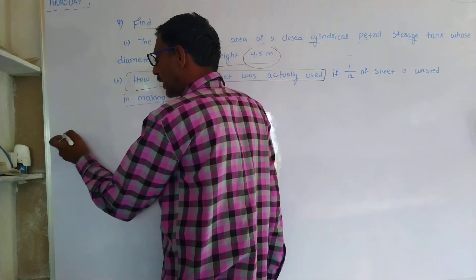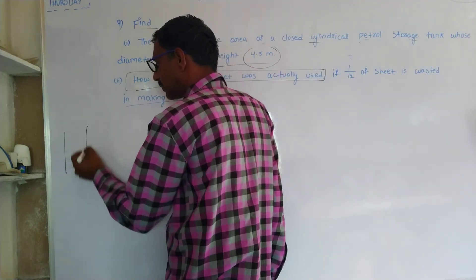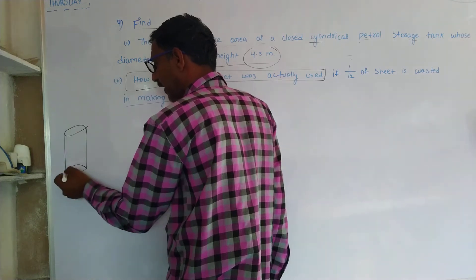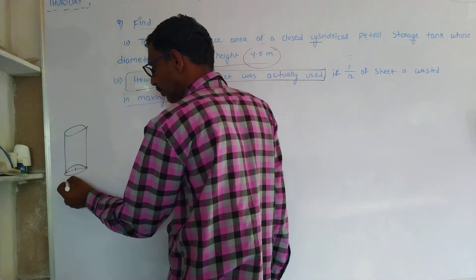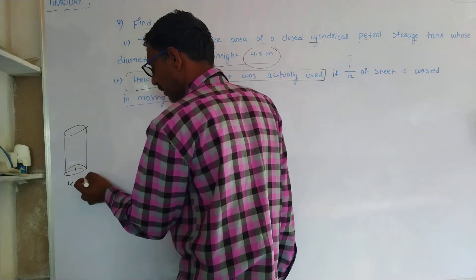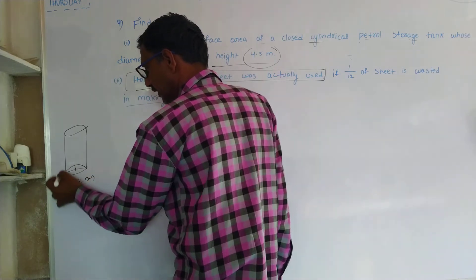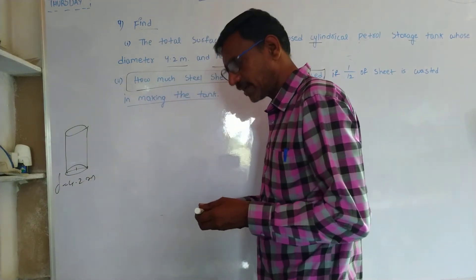This is my cylindrical tank of diameter 4.2 meters. This stands for diameter.